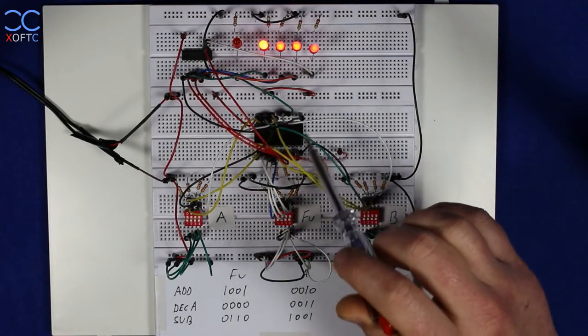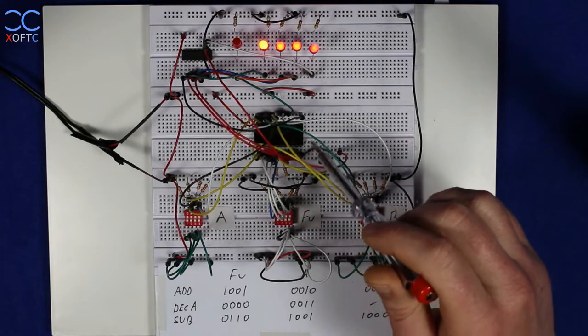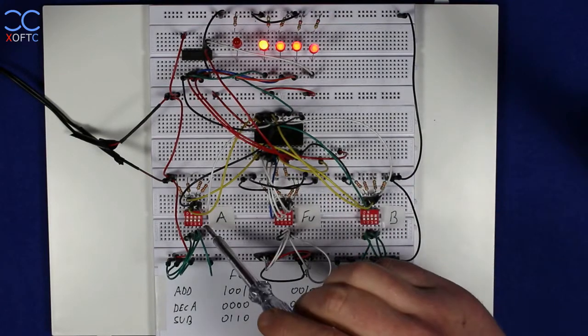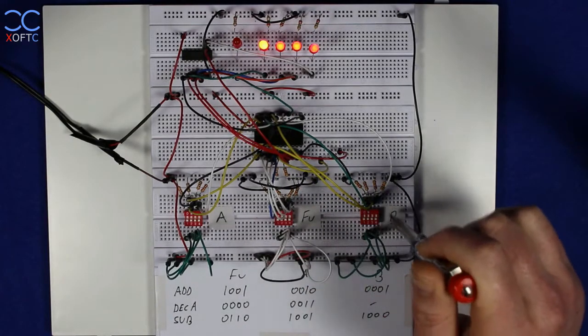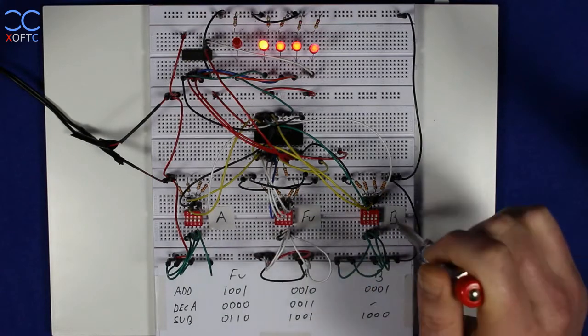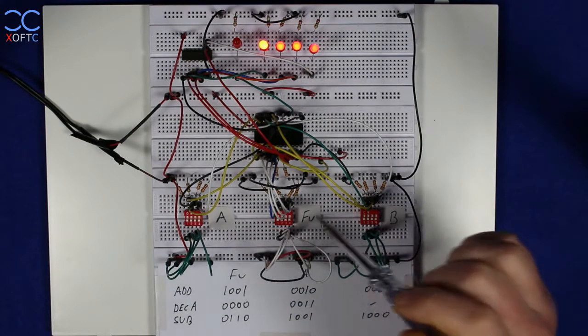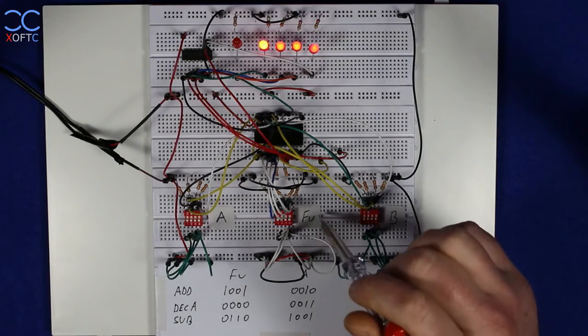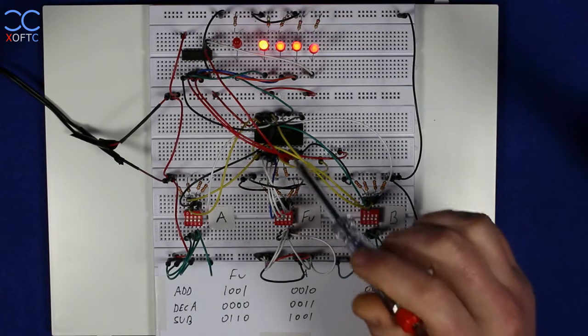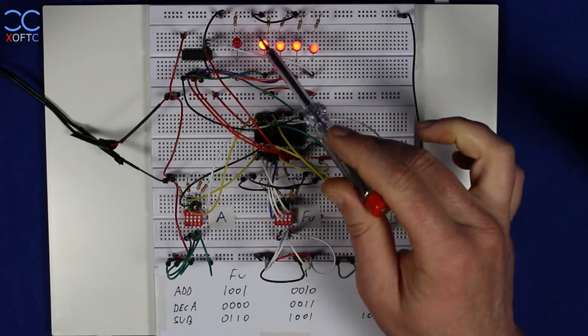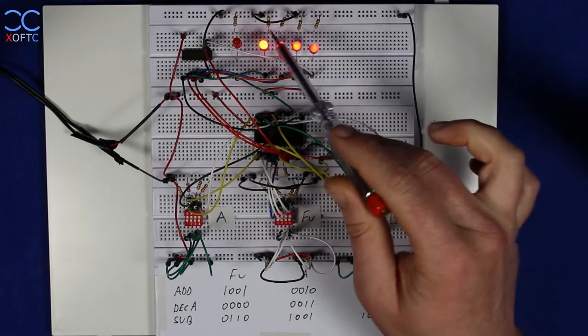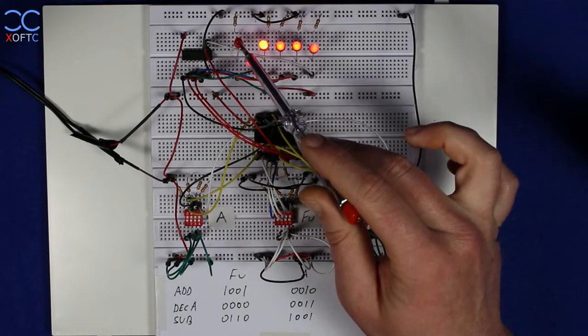We have our ALU here, again 74LS181. We have three 4-bit dip switches, two for the inputs A and B, and one for the function, so we can configure the various functions that we want to carry out. Here you can see the four outputs, the carry-on.